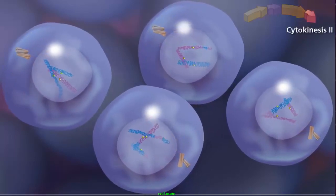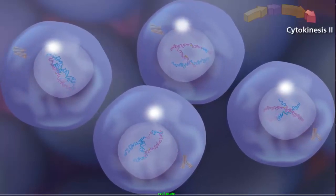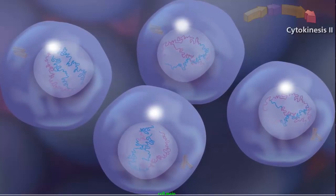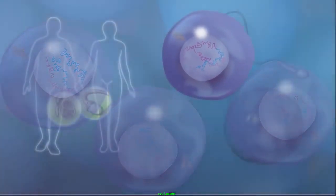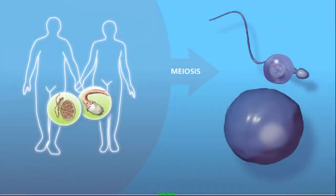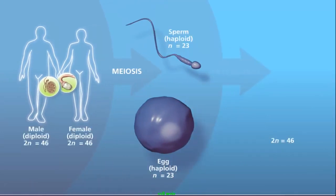The entire process ends with telophase II, as the chromosomes decondense and the nuclear envelope reforms. Cytokinesis occurs, and cleavage furrows separate the two daughter cells into four haploid daughter cells. The haploid daughter cells will specialize into gametes, either sperm or egg. These fuse in fertilization to form a zygote, which will grow into a child.